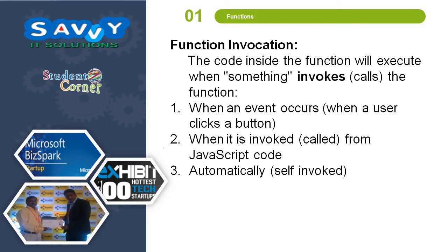Function invocation. The code inside the function will execute when something invokes or calls the function. When an event occurs, when a user clicks a button. When it is invoked, call from JavaScript code. Automatically self invoked. These three are the only few things we discussed now. But many more things are available in further classes. Try to understand the concept very clearly.